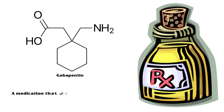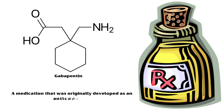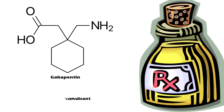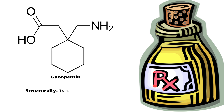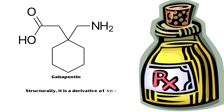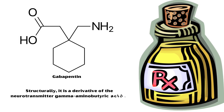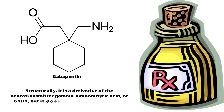Gabapentin is a medication that was originally developed as an anticonvulsant. Structurally, it is a derivative of the neurotransmitter gamma-aminobutyric acid, or GABA, but it does not bind to GABA receptors.